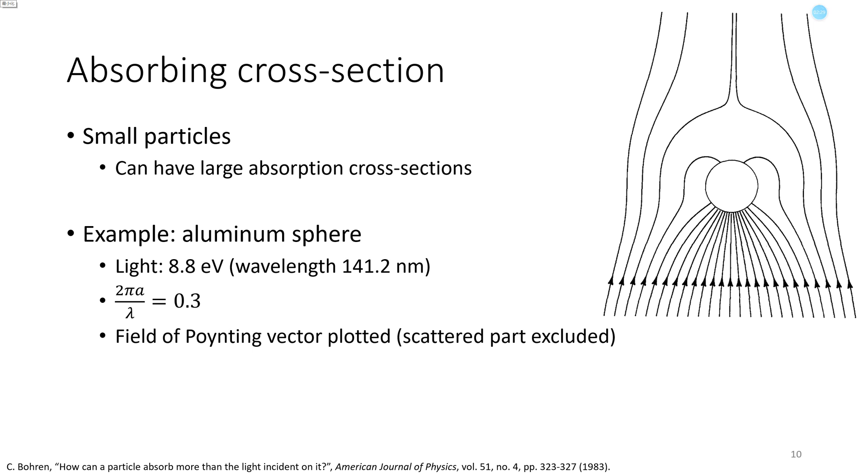For example, here we have a aluminum particle, whose radius, A, is much smaller compared with wavelength. The Poynting vectors at different locations are plotted, you can see these lines. The energy of incident light goes to this particle, and the absorption cross-section appears much larger than its geometrical cross-section.